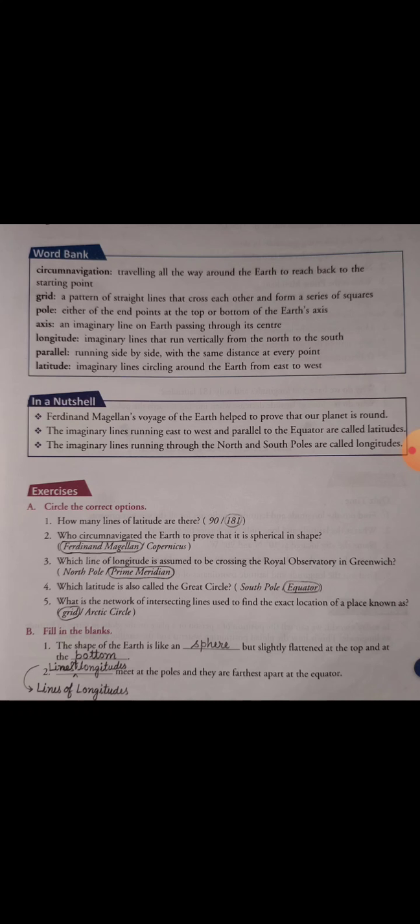Next: who circumnavigated the earth to prove that it is spherical in shape? A Portuguese explorer named Ferdinand Magellan circumnavigated and proved the earth is spherical in shape, so here we will circle Ferdinand Magellan. Which line of longitude is assumed to be crossing the Royal Observatory in Greenwich? It is the prime meridian — as I told you when we discussed the prime meridian topic, it crosses the Royal Observatory in Greenwich.